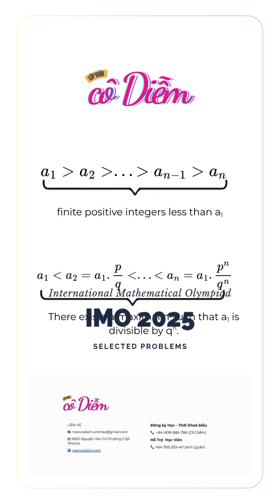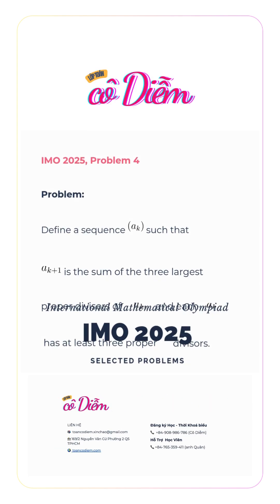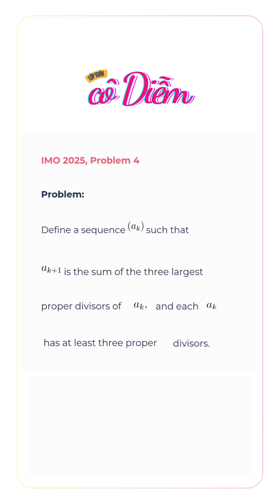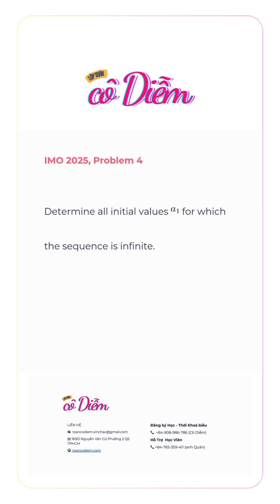IMO 2025 Problem 4. Define a sequence a_k such that a_{k+1} is the sum of the three largest proper divisors of a_k, and each a_k has at least three proper divisors. Determine all initial values a_1 for which the sequence is infinite.